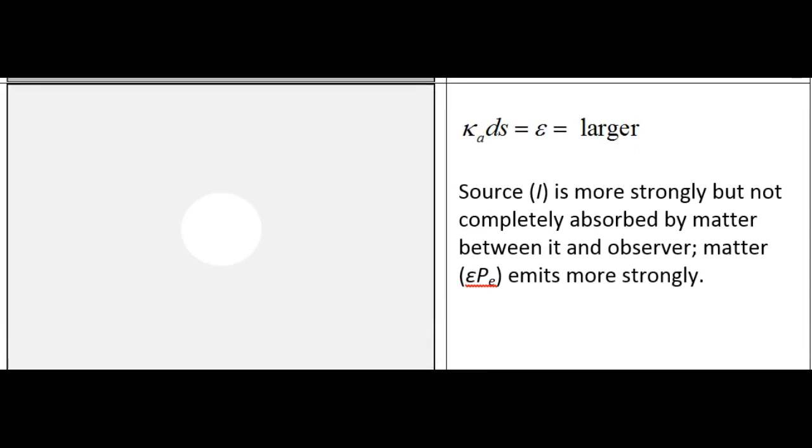For the third case of stronger absorptivity, the absorption is stronger so that the source is harder to see, but the atmosphere is now emitting more.